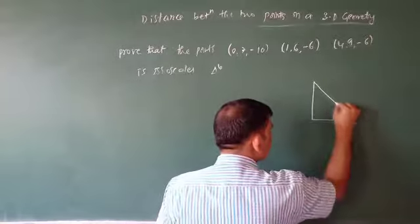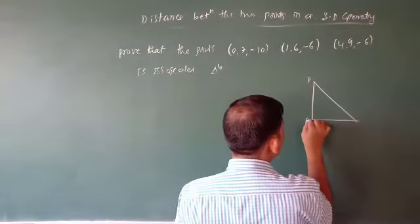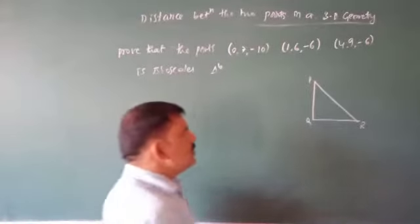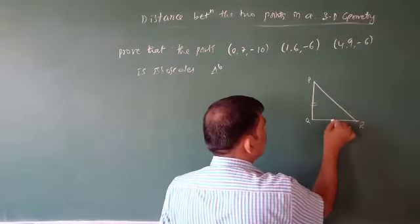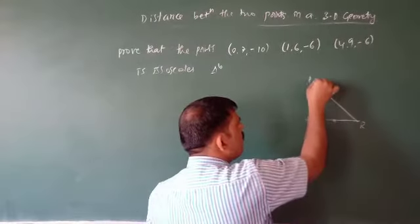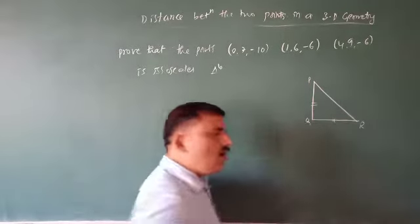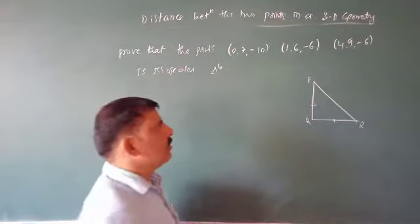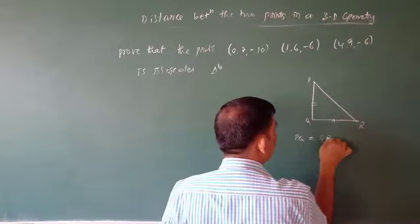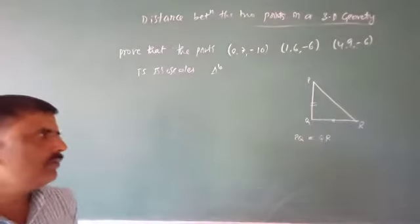The three points are P, Q, and R. The distance between two sides — if PQ is also equal to QR — then that is an isosceles triangle. For an isosceles triangle, two sides must be equal, so PQ = QR.